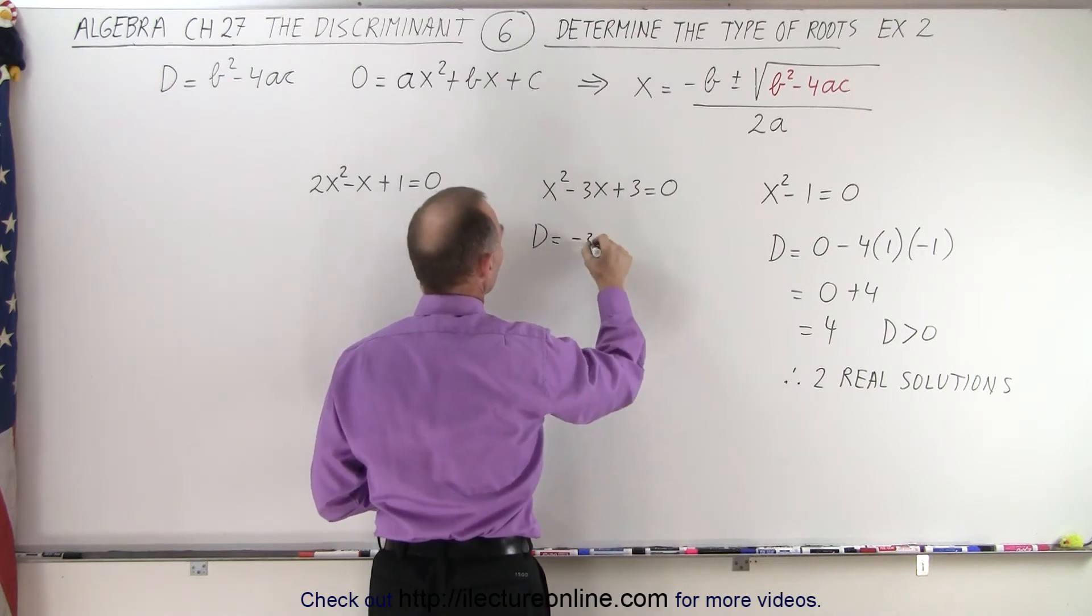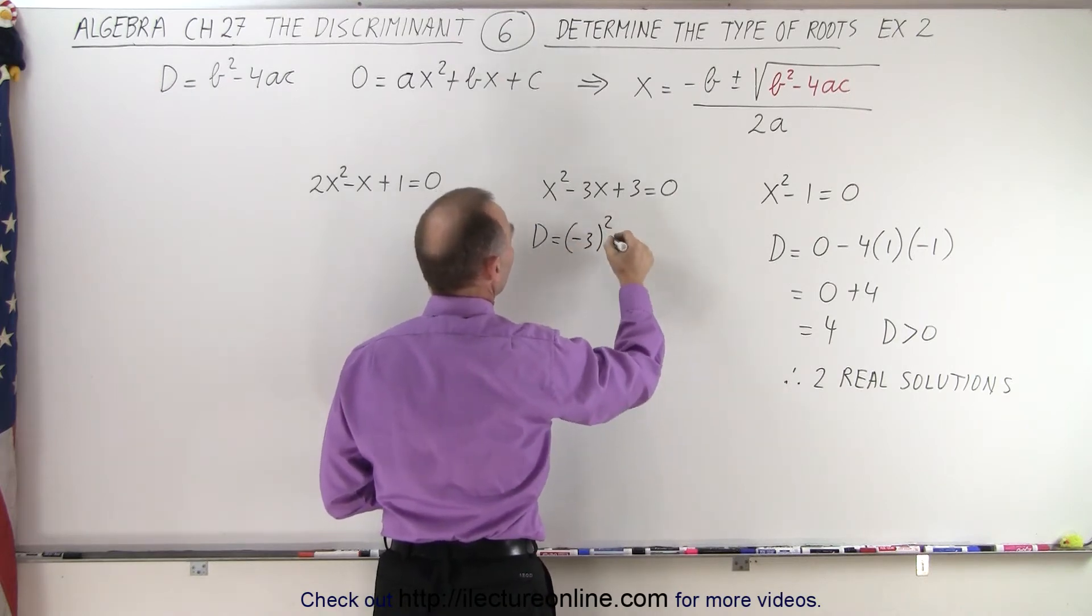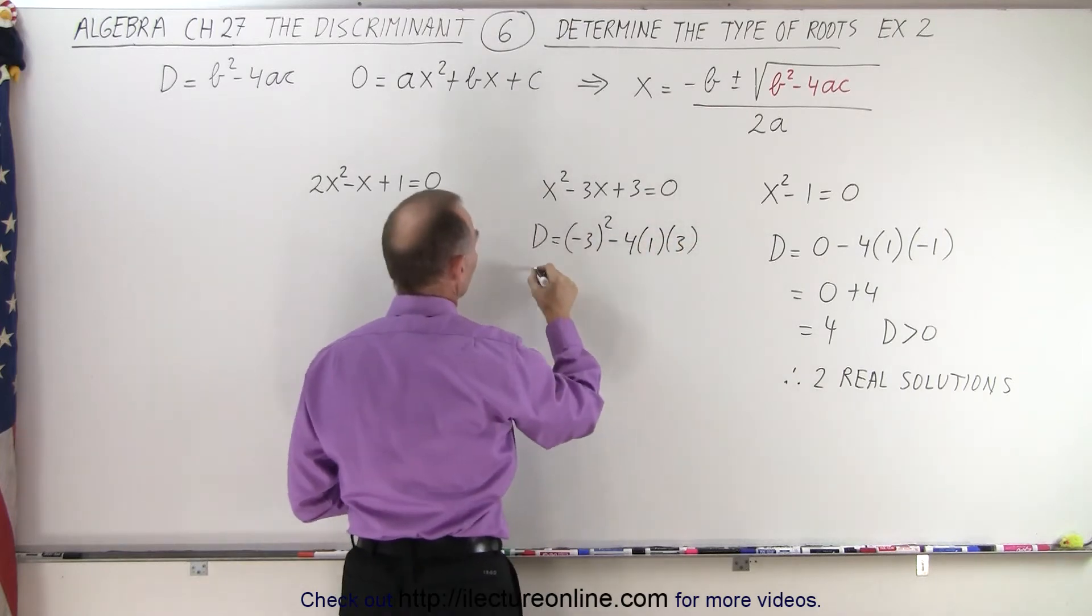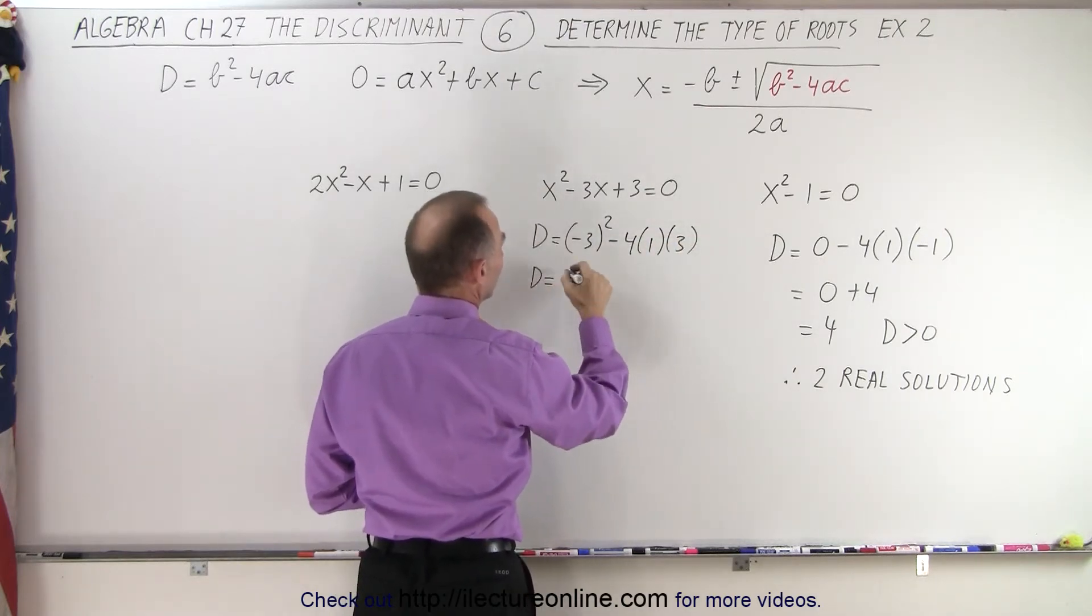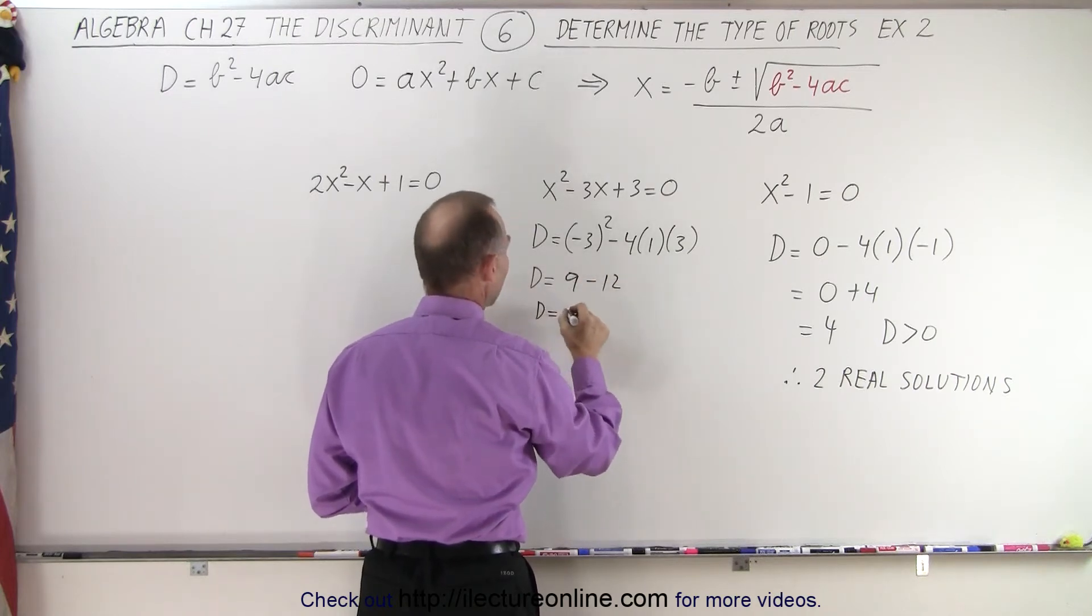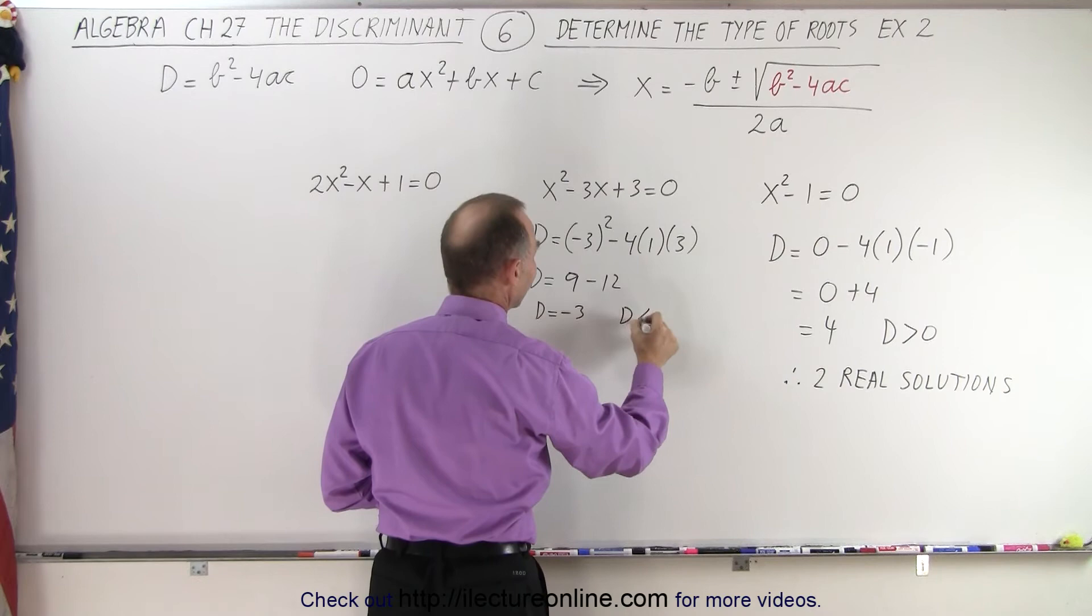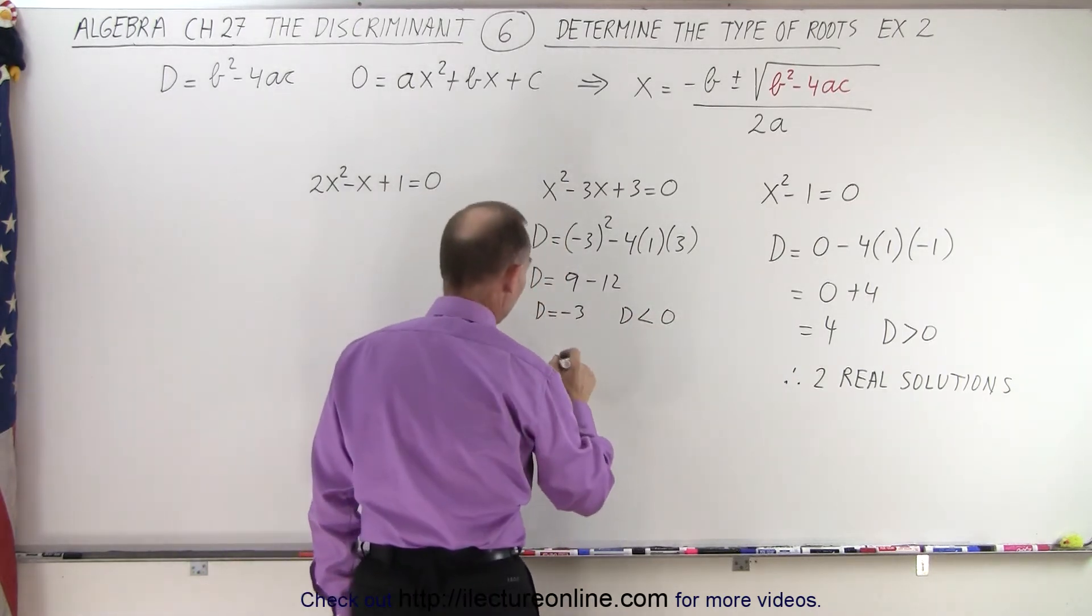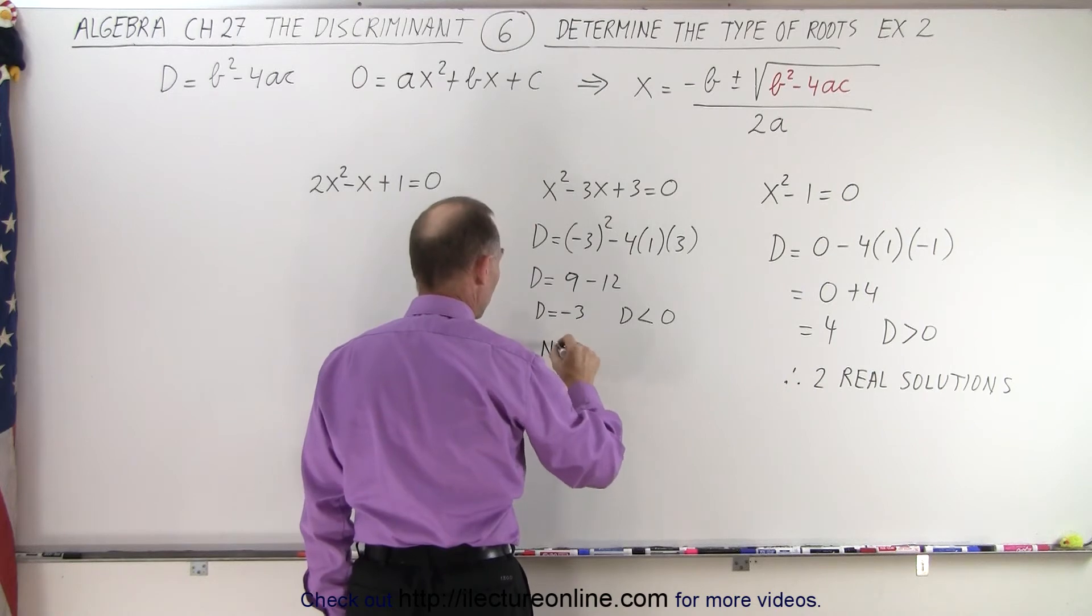So that means we have negative 3 squared minus 4 times a times c. So this is equal to 9 minus 12. Well, that looks like it is a negative number. So d is less than 0, which means there are no real solutions, only two imaginary solutions.